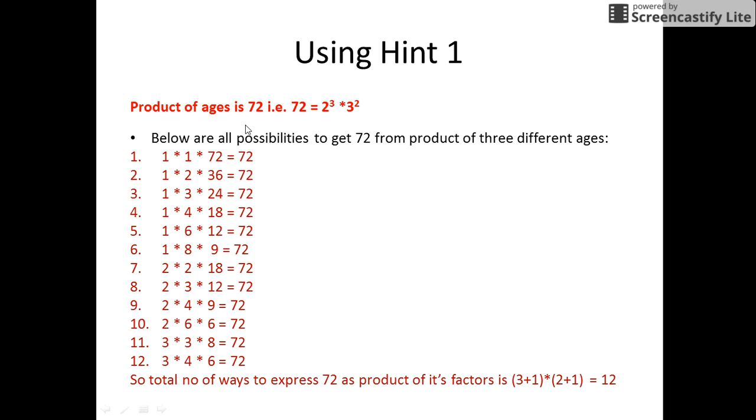The product of the ages of the three daughters is 72. This was the first hint given to Shyam. Now 72 can be expressed as 2 raised to the power 3 into 3 raised to power 2.